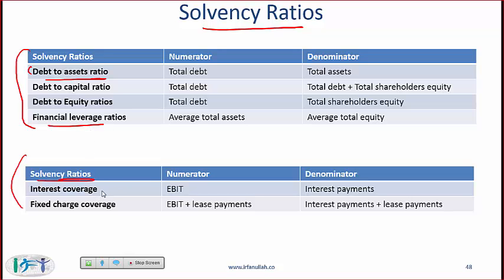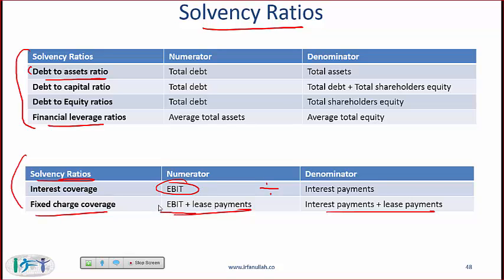The second category of solvency ratios covers coverage ratios. Interest coverage is EBIT (operating income) divided by interest payments. Fixed charge coverage is EBIT plus lease payments divided by interest payments plus lease payments — this measures the ability to pay both interest and lease obligations. Since EBIT is calculated after lease payments, you add back lease payments to the numerator. With these ratios a high number is good, meaning earnings are high relative to the interest or lease payments required.